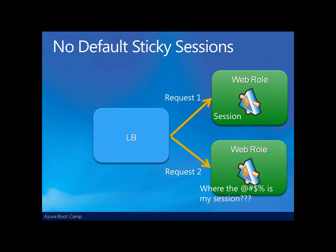To give us a visualization of this: if a request comes in from outside, it hits the load balancer, and dealing with web roles versus worker roles, request one might go to web role one, establishing something in Session. But the very next request by that same user might get load balanced to the second web role. And thereby, we've apparently lost what might be in Session. In fact, we didn't lose it — it's just that the Session is not available across all instances of our role.